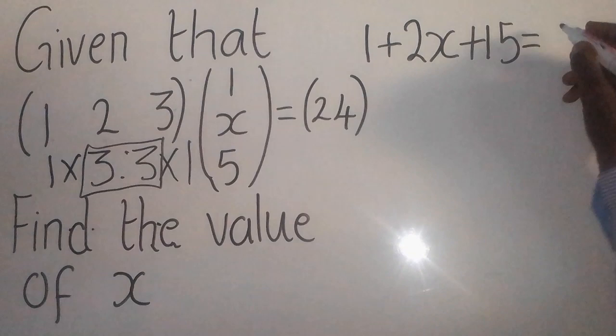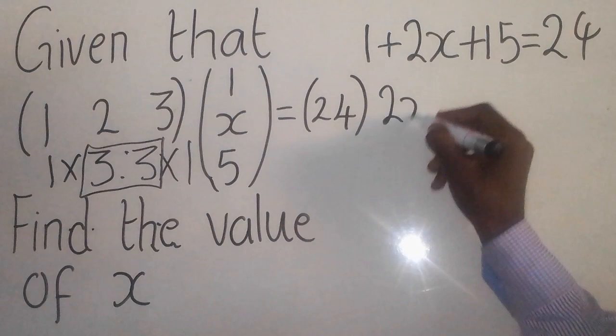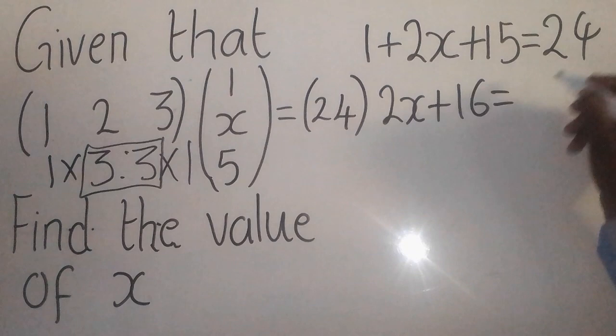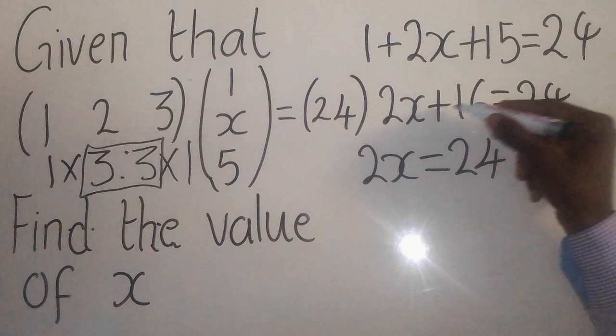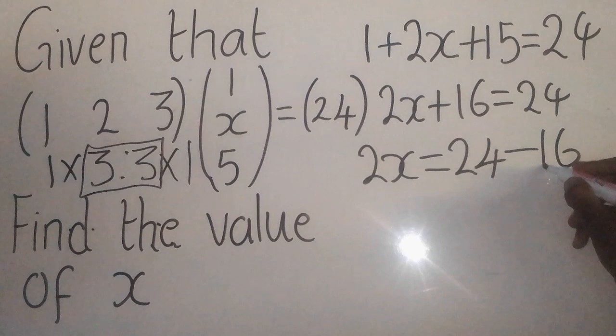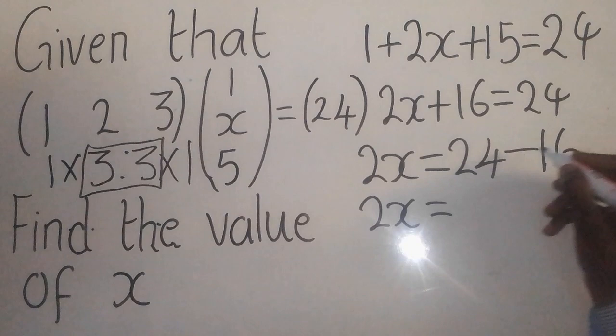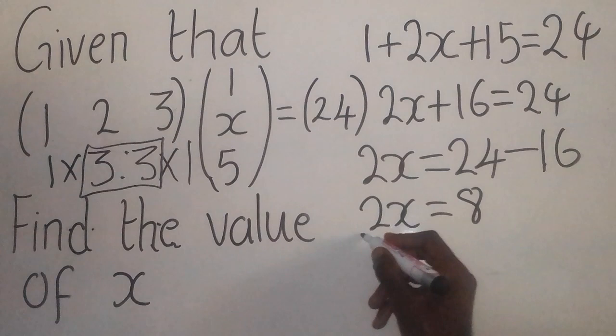So these 2x will come down like this, equal to 24. This positive 16 will come to the other side, so it will be negative 16. Therefore, 2x equals 24 minus 16, which gives me 8.